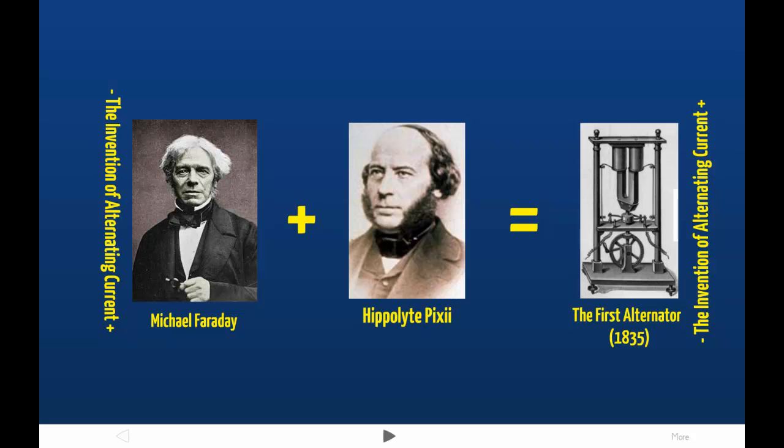It worked by using a hand crank to turn a magnet past two soft iron cores wrapped in copper wire. The movement of the magnet past these iron and copper induction coils created an electric current. This machine turned out to be the first alternator, which is a generator that produces an alternating current.